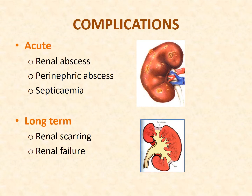UTI in children needs to be treated properly due to its potential short and long-term complications. Short-term complications include renal abscess, paranephric abscess, and septicemia. The long-term complication is renal scarring, which can lead to renal failure.